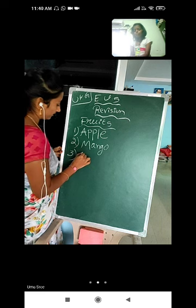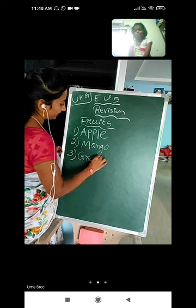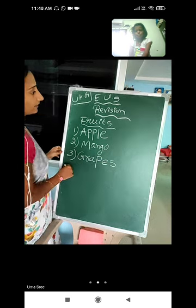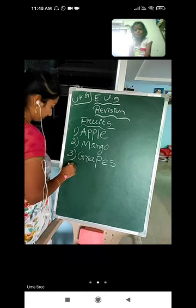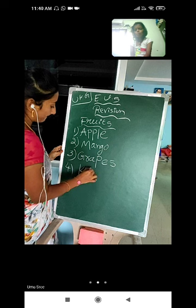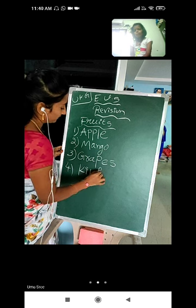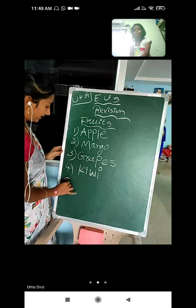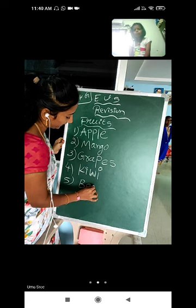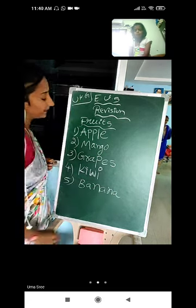Third one is Grapes — G, R, A, P, E, S. Fourth one is Kiwi — K, I, W, I. Fifth one is Banana — B, A, N, A, N, A.